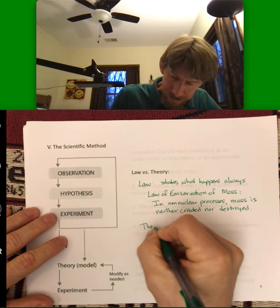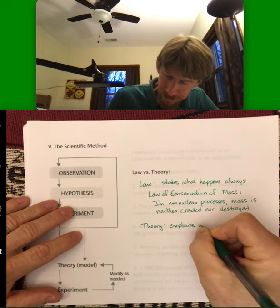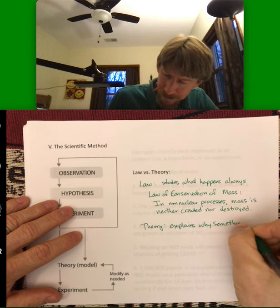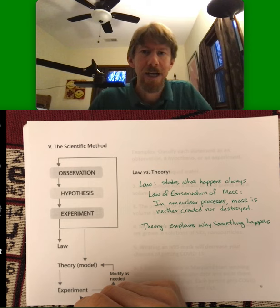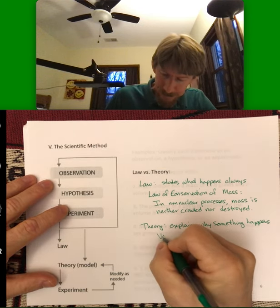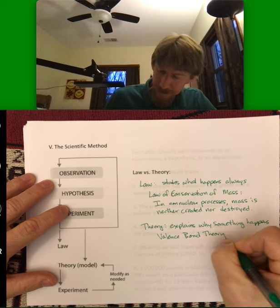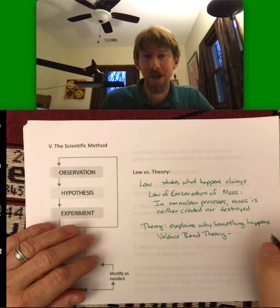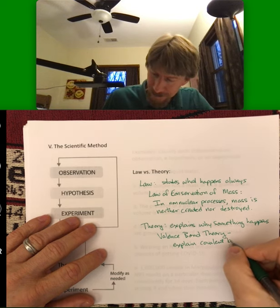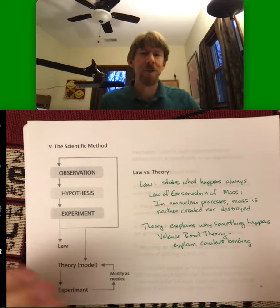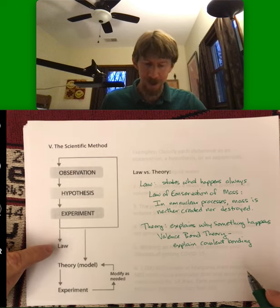Now a theory explains why something happens. And as an example of a theory we will run into, it's called valence bond theory. And that will explain covalent bonding. And don't worry if you don't know these terms yet. We just want to get the idea that once you do enough experiments, hypothesis, experiments, observations, you can get to laws and theories.